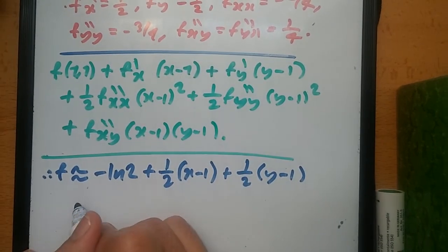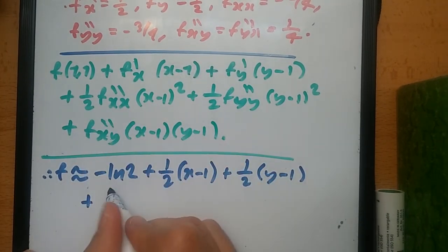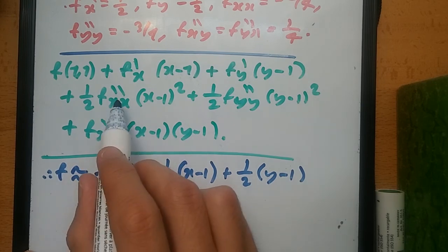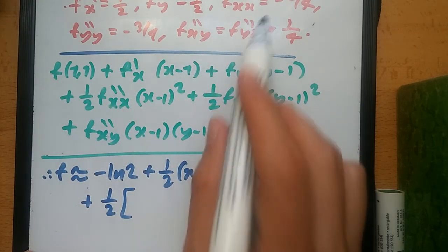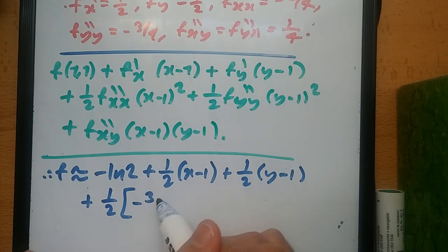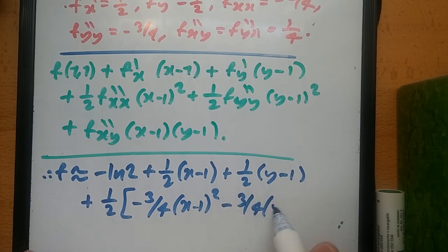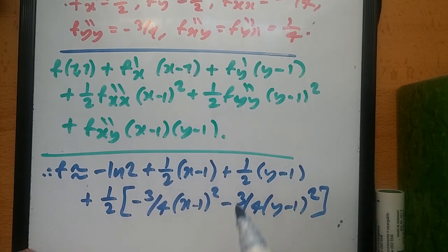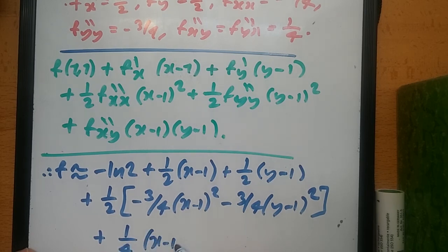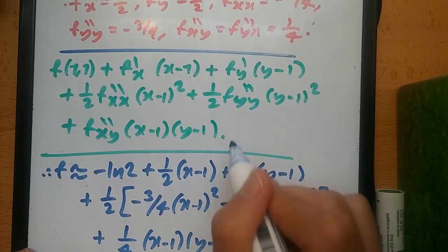Okay. Next one would be plus, so I can just factorize this part. Half, half. So f prime xx would be minus 3 over 4, x minus 1 squared. Again, minus 3 over 4, y minus 1 squared. And the last one, f xy would be plus 1 over 4, x minus 1, y minus 1, plus dot dot dot. And that's it. That's our Taylor series expansion.